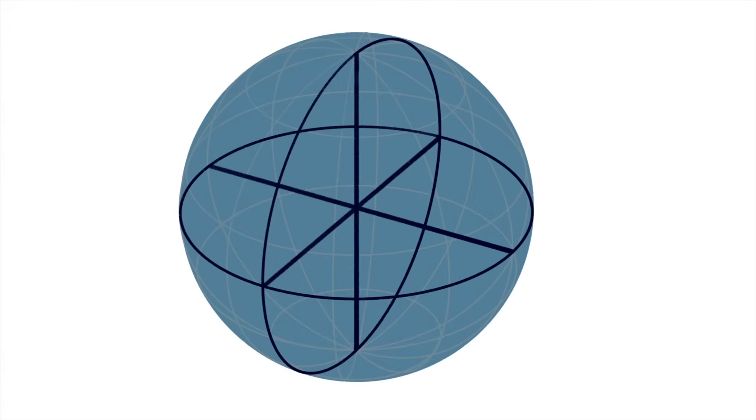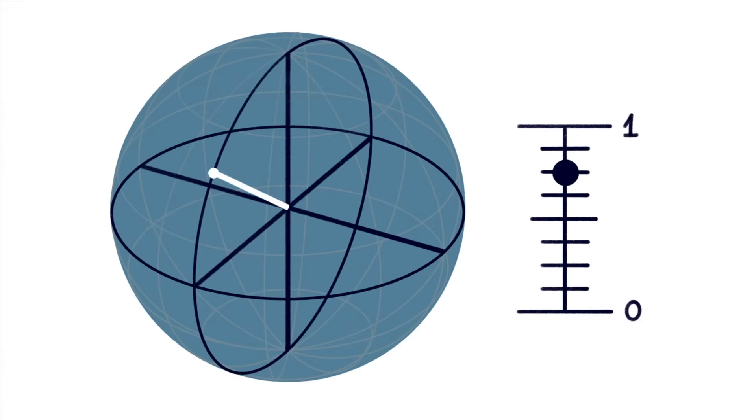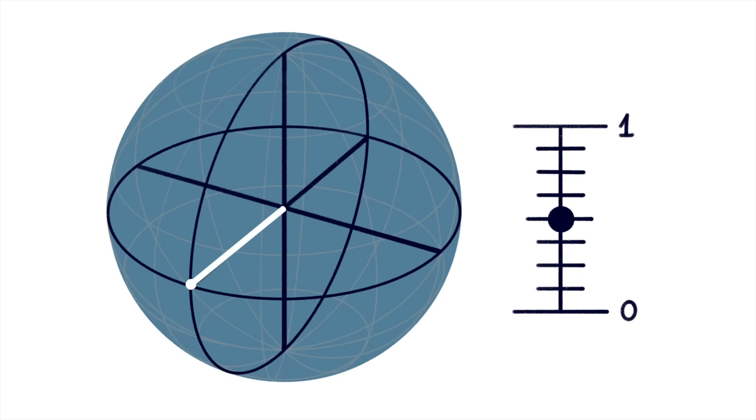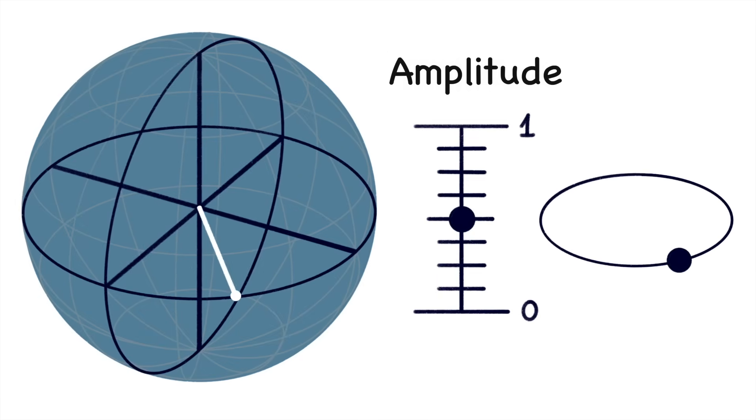While this is not incorrect, a more accurate way of visualizing qubits is as a point on the surface of a sphere. The height of this point with respect to the vertical axis again represents the bit value, which you can think of as a weighted combination of 0 and 1. Yet there's also another degree of freedom in form of the rotation in the horizontal plane of the sphere. We call this the qubits phase.